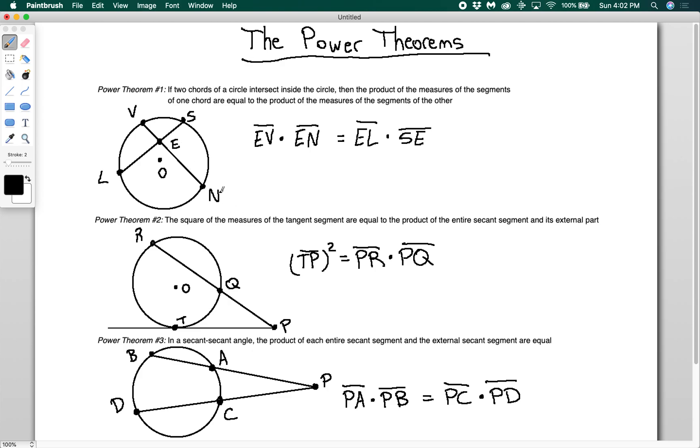I should label this point as E. So EV times EN is equal to EL times ES. You actually proved this already. This was a proof in the last video, where you set up similar triangles. If we draw lines connecting V and L and S and N and then prove the two triangles are similar, then you can prove that corresponding sides of similar triangles are similar, and that's where that one comes from.